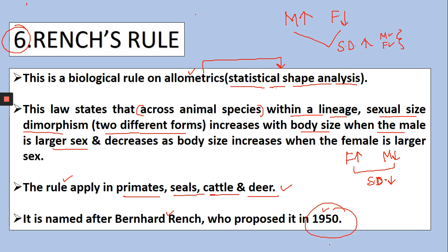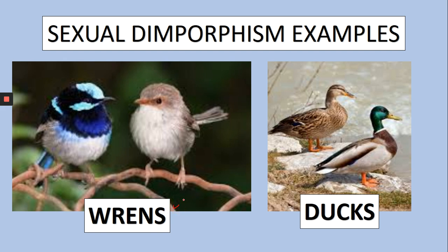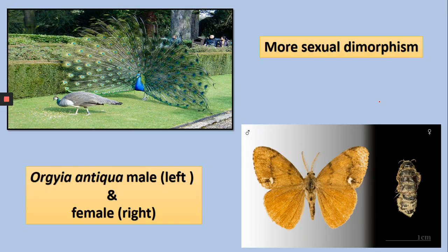We can understand this rule better with the help of examples. Here you can see these are birds — you can see that sexual dimorphism is clearly visible. Here the male size is larger and the female size is smaller. In the case of ducks also, you can clearly see male and female ducks where the male size is larger and female size is smaller. Same is the case with peacock and peahen. Again, here you can clearly see sexual dimorphism. On the right side this is a female whose size is smaller again, and the male size is larger. You can see how high the sexual dimorphism is.